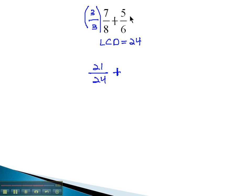6 needs to be 24, so it needs to be multiplied by 4 in the numerator and denominator. 5 times 4 is 20 over 6 times 4 is 24.